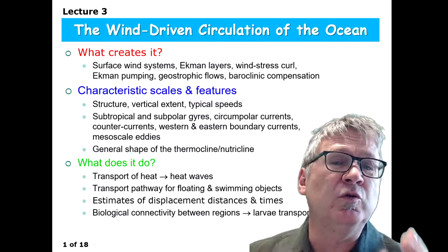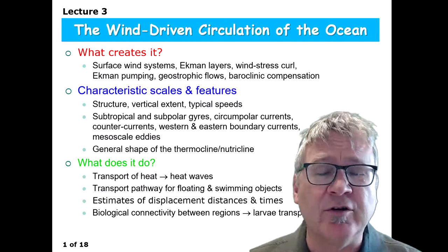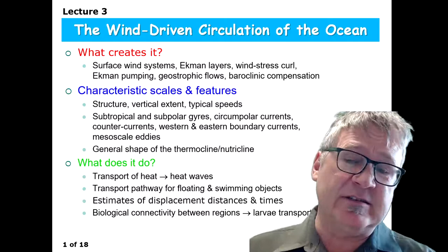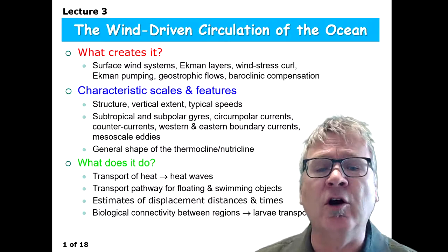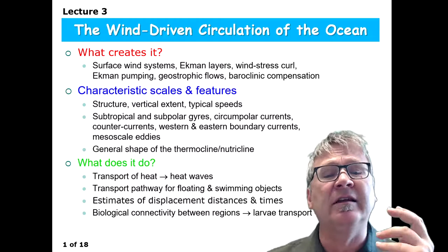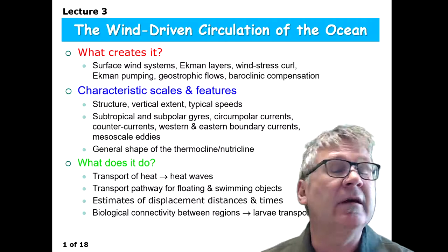So what do you do? How do you actually change like the speed of western boundary currents? Let me talk about characteristic scales. So what's the structure? And when you learn about subtropical subpolar gyres, what are the typical speeds actually of horizontal currents in the open ocean? And you learn about circumpolar currents, counter currents, western and eastern boundary currents. And I also mention mesoscale eddies.